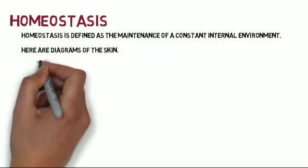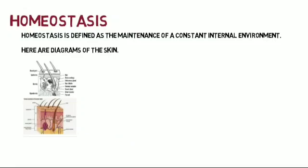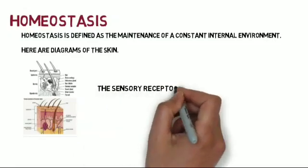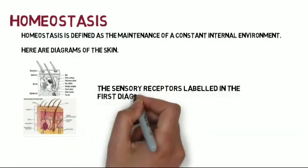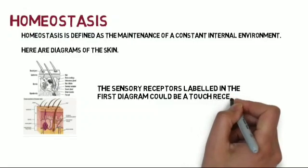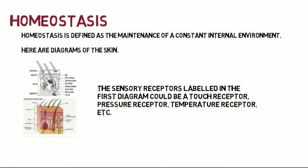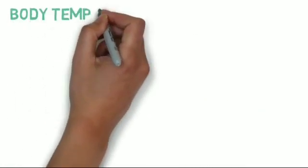Here are diagrams of the skin. The sensory receptors labelled in the first diagram could be a touch receptor, pressure receptor, temperature receptor, etc. Body temperature.